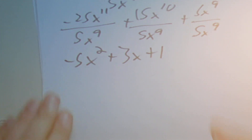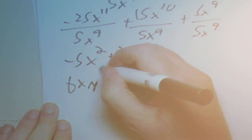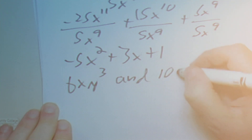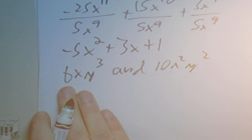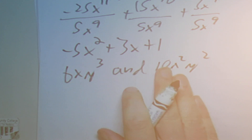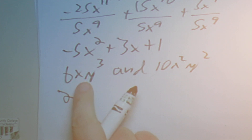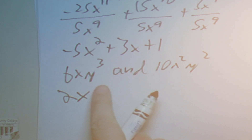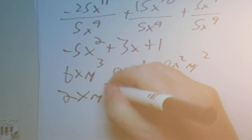Then we find the greatest common factor of 6xy to the 3 and 10x squared y squared. Looking at the numbers, the biggest number that goes into both 6 and 10 is 2. The smallest exponent for x is just x, and the smallest exponent for y is y squared. So the GCF is 2xy squared.